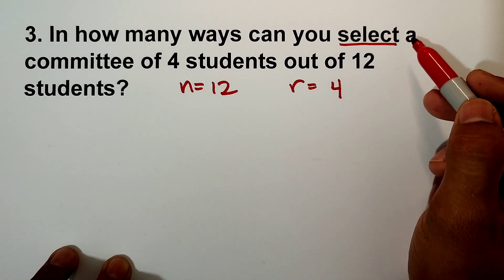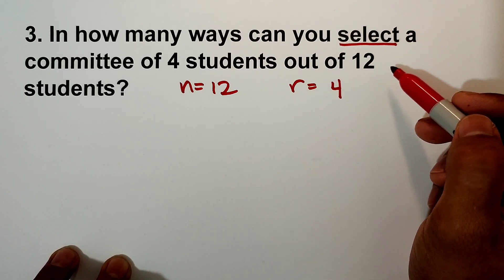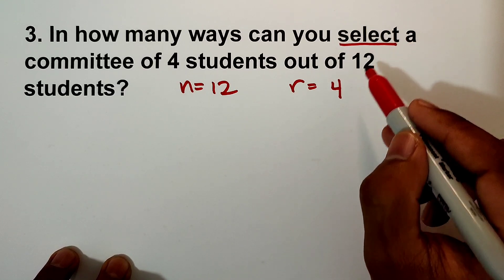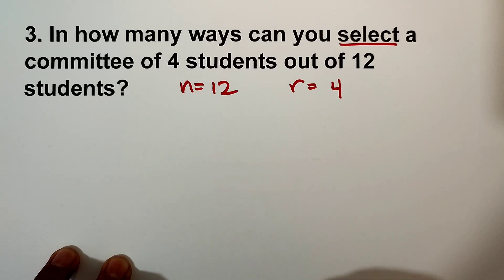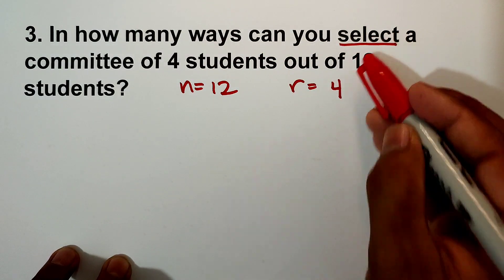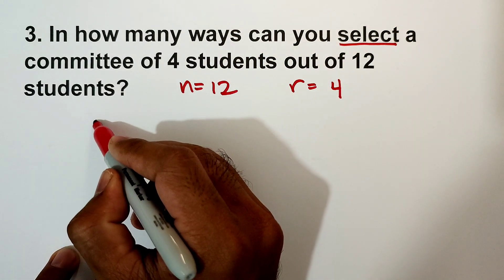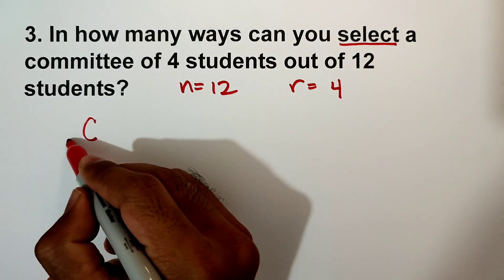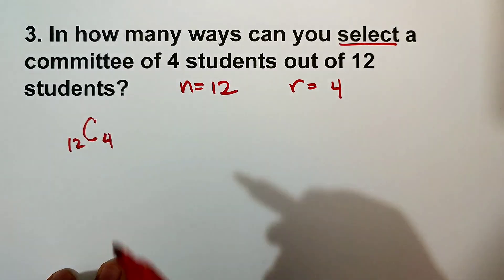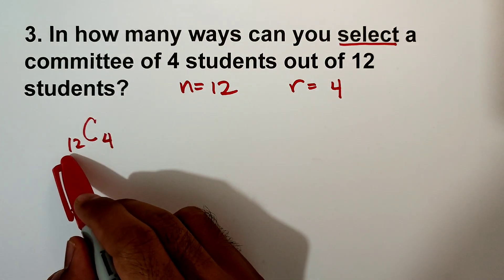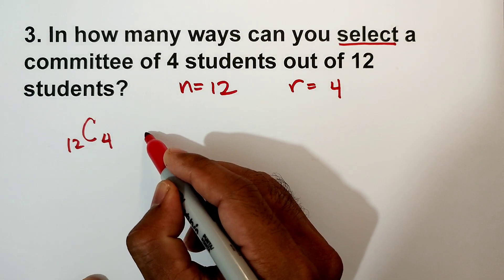We have to find out how many ways can you select. So the word select - that is combination, of course. Combination of 12 taken 4. Okay, 4 students out of 12.